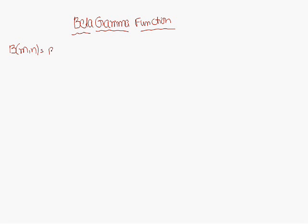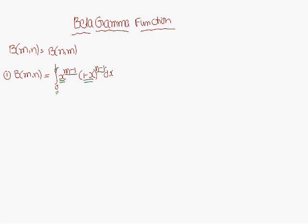Beta(m, n) is equal to Beta(n, m). For that, what is Beta(m, n)? Let us consider Beta(m, n) — it is nothing but equal to the integral from 0 to 1 of x^(m-1) into (1 minus x)^(n-1) dx. So here it is x and (1 minus x), with powers m minus 1 and n minus 1. Okay, this you have to remember.